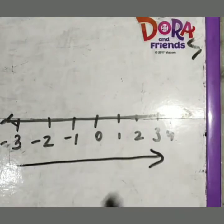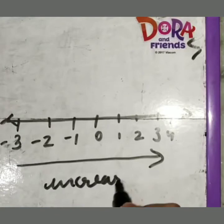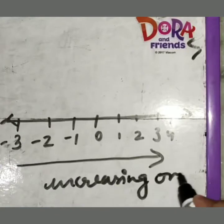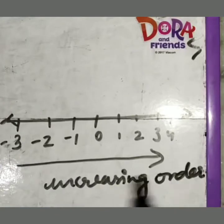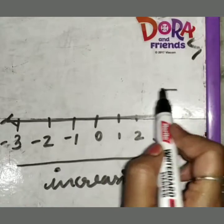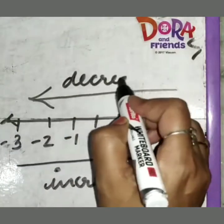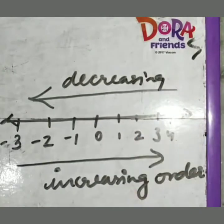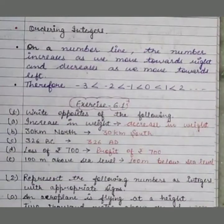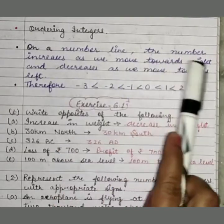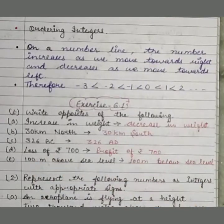If we are moving to the right side, it is increasing order. And when we are moving toward the left, this is decreasing order. So, on a number line, the number increases as we move towards the right and decreases as we move towards the left.